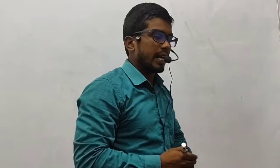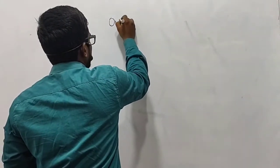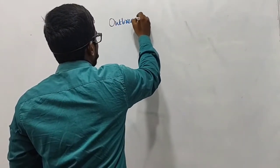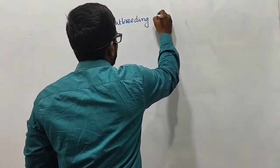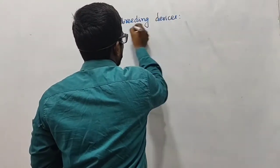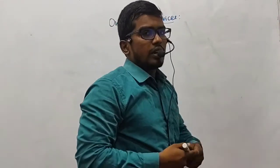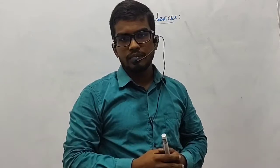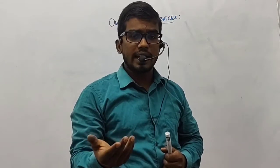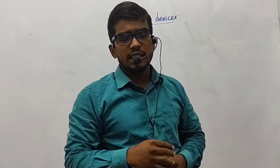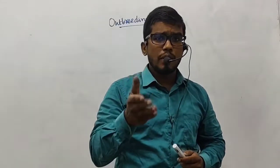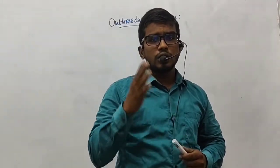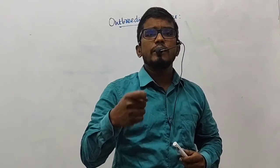Dear friends and viewers, today we are going to discuss one more very important topic: outbreeding devices. As we all know, the majority of angiospermic plants are bisexual. Hence, self-pollination is more common. When self-pollination occurs, there will be inbreeding depression.